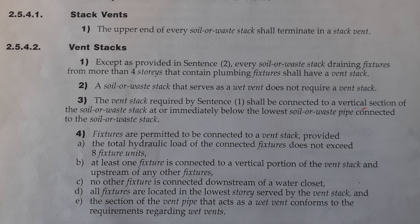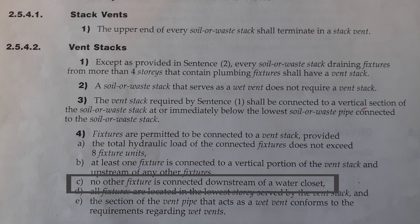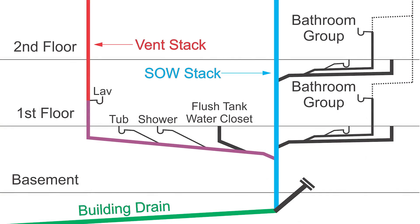Clause 2542, 4, part C: no other fixture is connected downstream of the water closet. What we see in this picture is the water closet connected downstream of all other fixtures, and it's the last one before we get to the soil away stack — so we've met that requirement.